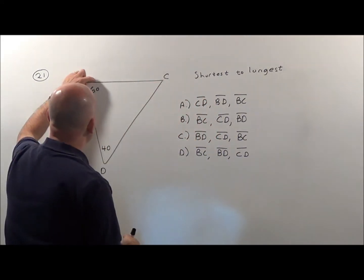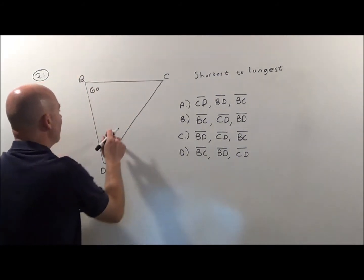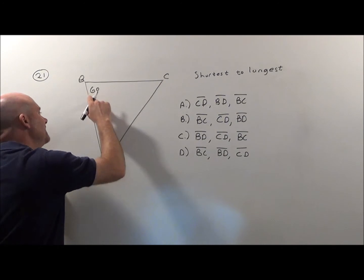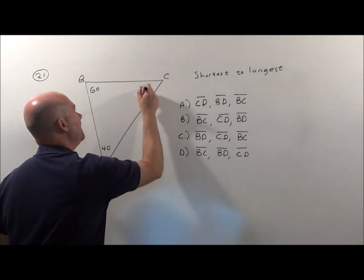So right off, I know this across from 60, that guy is bigger than this side formed from the 40. Now I need to figure out what that angle is. 60 and 40 is 100, since the triangle adds up to 180, this is 80.